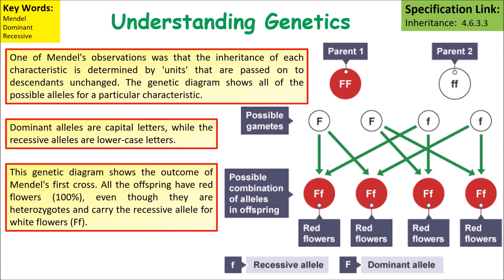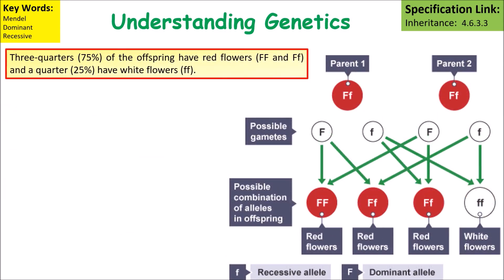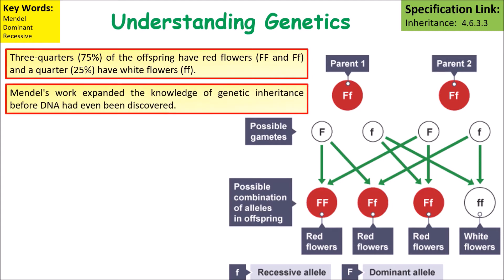Heterozygous means different or two. If we bred two of these red flowered plants together, three quarters of the offspring would have red flowers and a quarter would have white flowers. Mendel's work helped explain this even before DNA had been discovered. We can see from the genetic crosses that one out of four would end up with two recessive genes, giving a white flower.